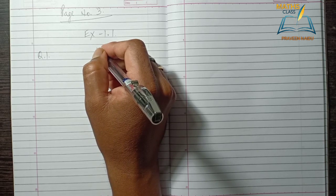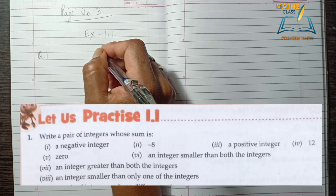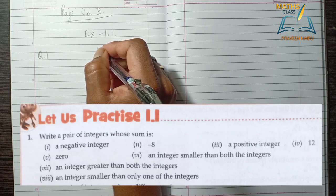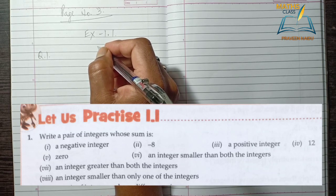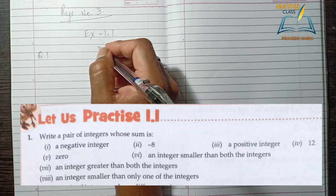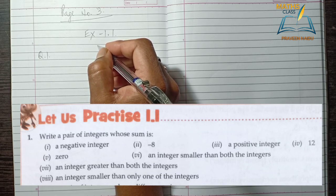With regular numbers, when we add numbers, we just find the sum of the two numbers. But in integers, since we use negative and positive signs, addition and subtraction of integers are different from addition and subtraction of regular numbers.